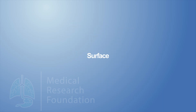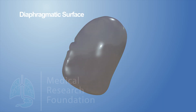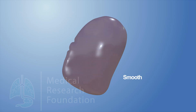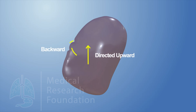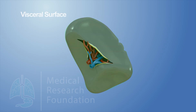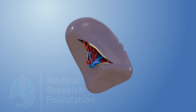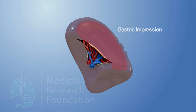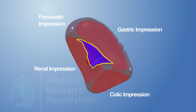The diaphragmatic surface is smooth, convex, and directed upward, backward, and to the left. The visceral surface is concave and irregular, and presents four impressions: gastric, renal, colic, and pancreatic.